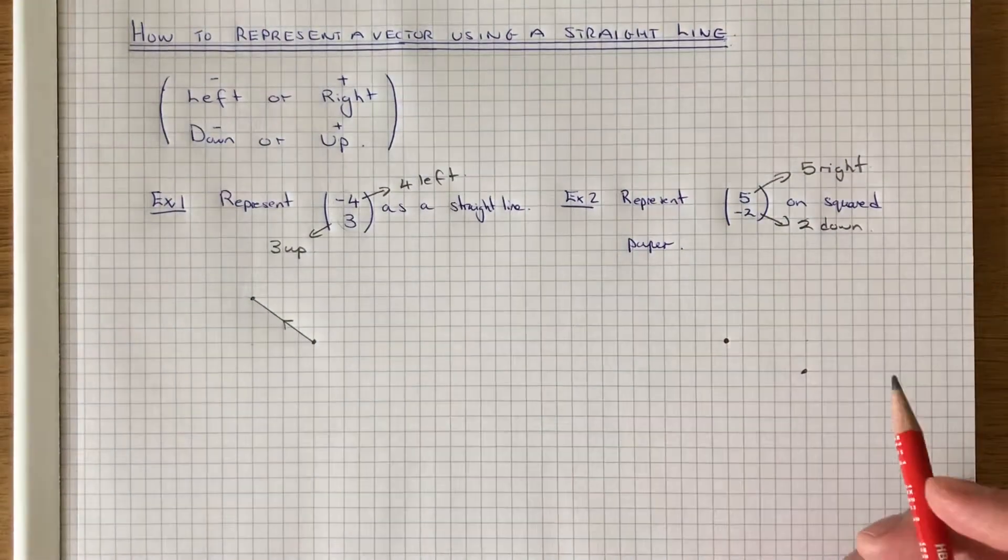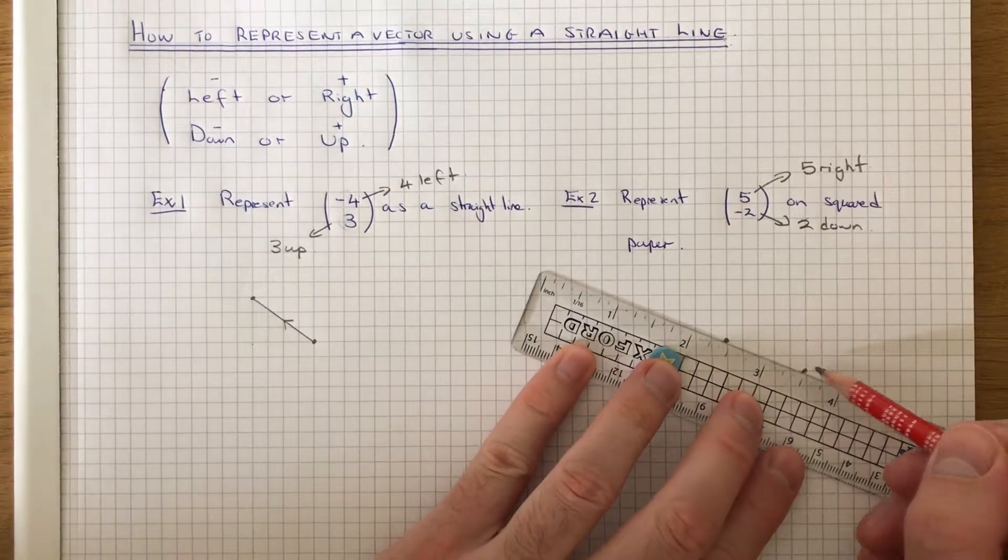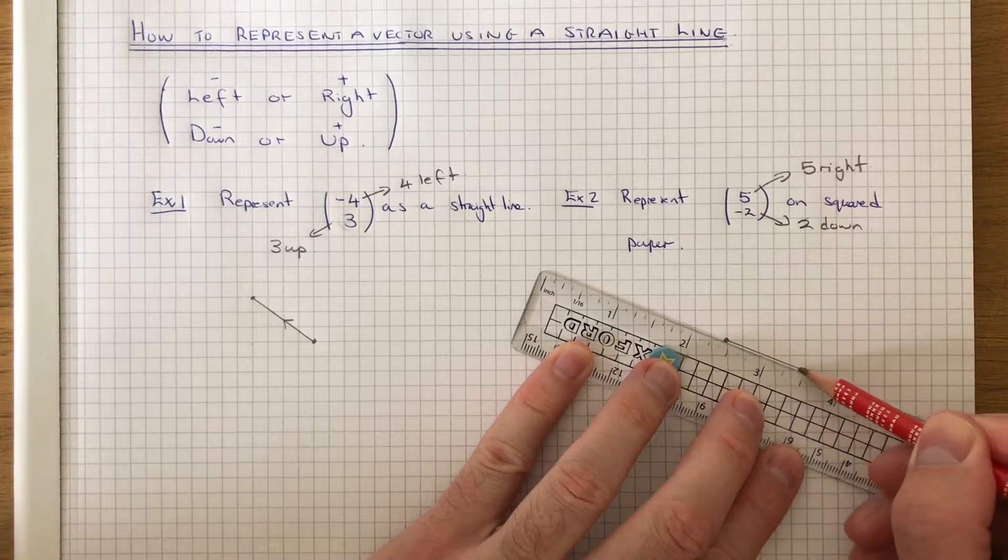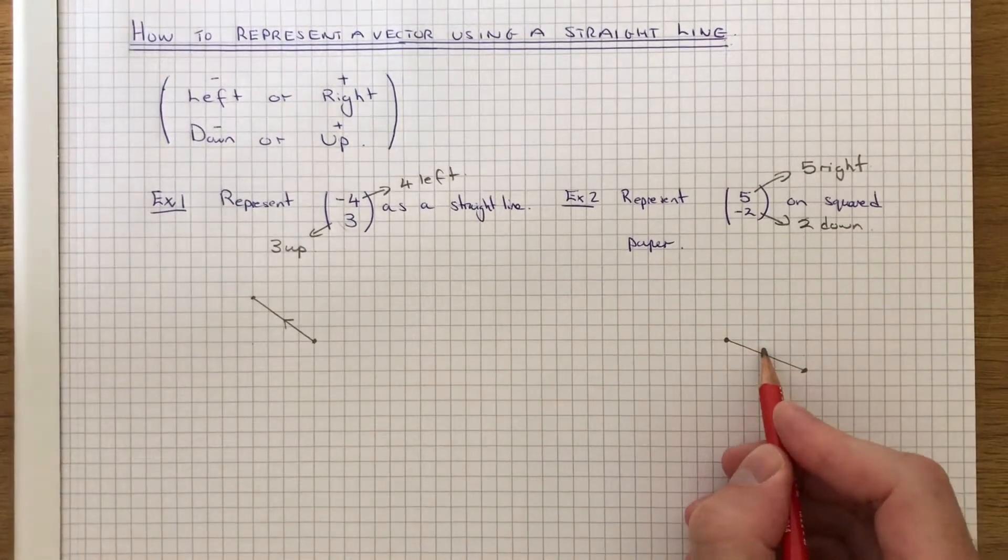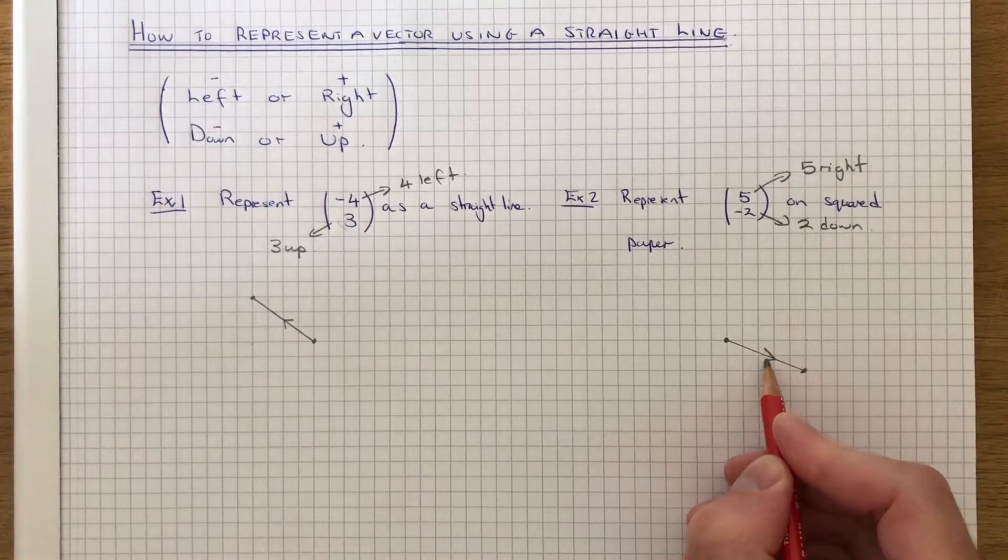Again, if we just join the two points up with a straight line. We started here and we finished here, so the arrow will go downwards.